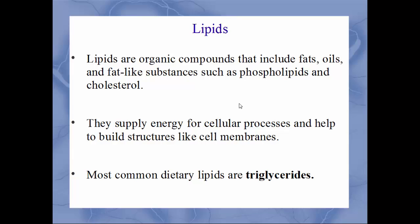Next we'll move on to lipids. These are the organic compounds that include fats, oils, cholesterol, phospholipids, and so on. They supply energy for cellular processes and help to build structures like cell membranes — all cell membranes are chains of phospholipids end to end. The most common type of lipid found in diets is called triglycerides, named because there are three fatty acid chains on each unit.